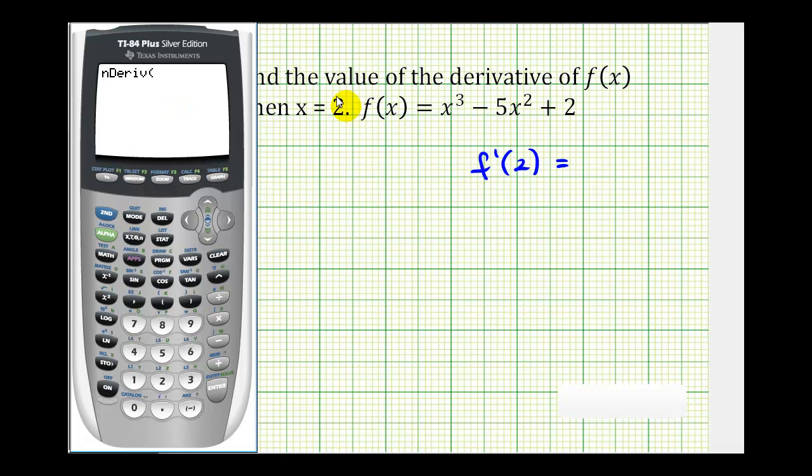And then we type in the right side of our function. So we have x to the third minus 5x squared plus 2. Now we have to press comma x, and then comma the value of x that we want to evaluate the derivative at, which is 2.